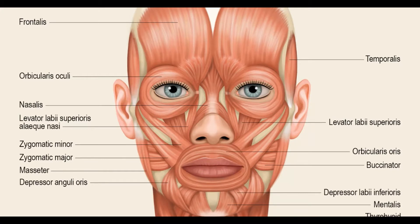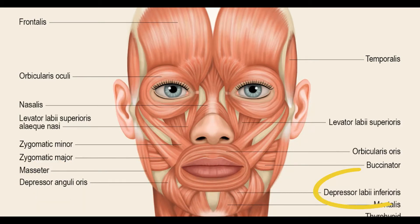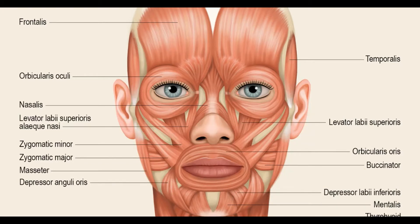The first one is the depressor angulae oris, the second is the depressor labii inferioris, and then the mentalis.